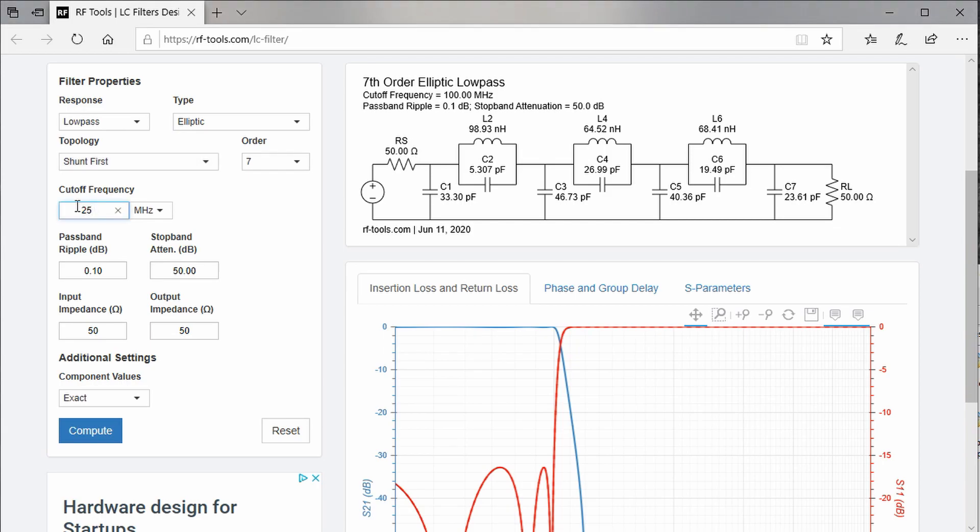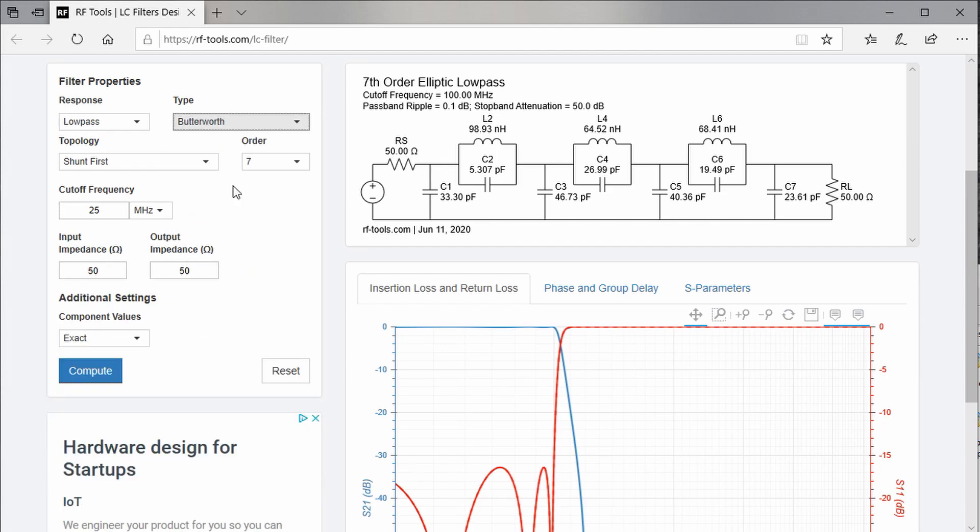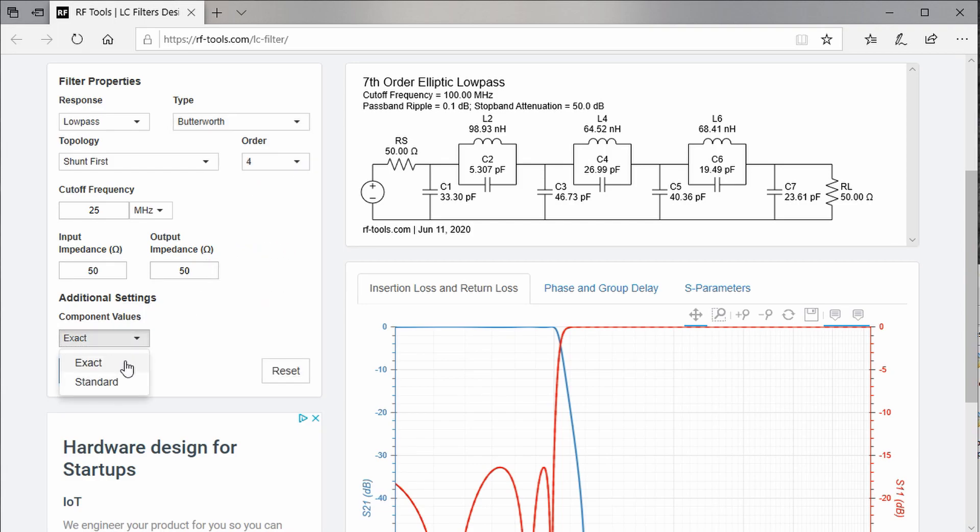So, low-pass 25MHz cutoff and 50 Ohms on both sides are evident. But the rest? For example, the type? These names sound very exotic. Which one to choose? It does not matter too much for this application, so we choose Butterworth. Maybe because of sympathy with our British colleagues which suffered a lot because of Corona. Order 4. Standard values and E12, because I do not want to wind the coils myself.